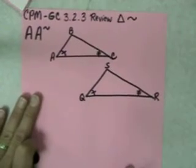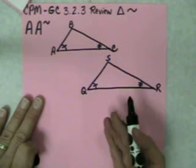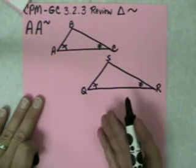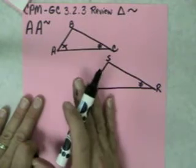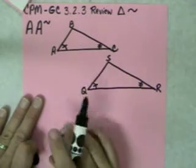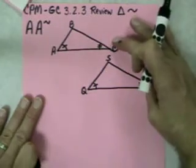Okay. The other shortcut we learned yesterday was angle-angle. This one is actually pretty easy, because usually if you have numbers, or if you have the markings for congruent angles, all you have to see is that you have two sets of congruent angle pairs. So, we have two here, and we have two over here.